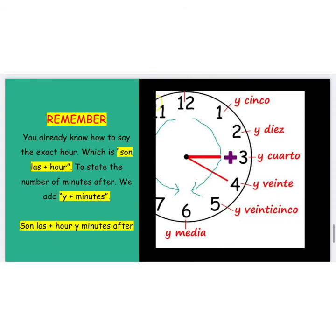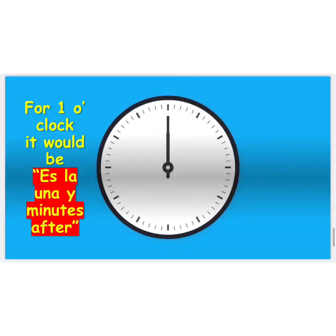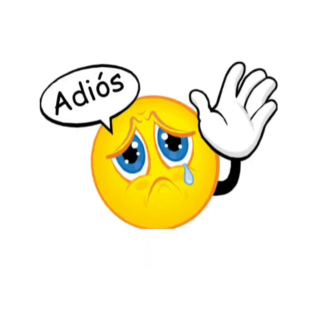So just remember students, to state the number of minutes after the hour in Spanish, all you need is son las, then you put the hour, followed by E, and the number of minutes after. But remember, for 1 o'clock we don't use son las. So instead of son las followed by E and the number of minutes after, for 1 o'clock we would use es la una, followed by the number of minutes after — so it would be es la una y, whichever number of minutes it is. For 1 o'clock we use es la una y the number of minutes after.